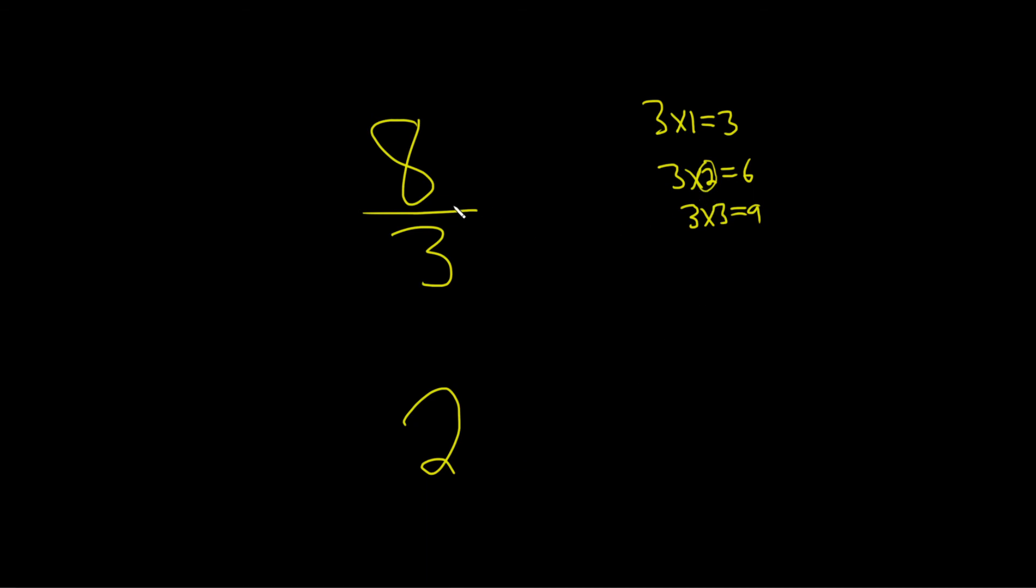So it goes into 8 two times, and then what's left over? Let's think about that. 3 times 2 is 6, so what's left? How many more numbers do you need to get to 8? 2, right, because 8 minus 6 is 2. So it's 2 over 3.